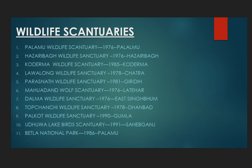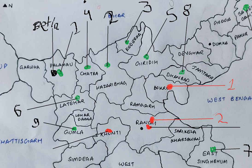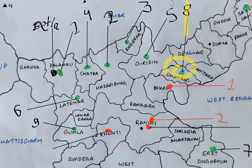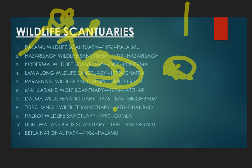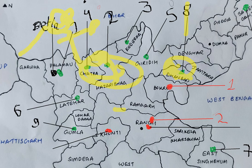Next is Topchanchi Wildlife Sanctuary in Dhanbad, established in 1978. It is situated at the foothills of the majestic Parasnath Hill, at a distance of 35 km from West Dhanbad. The area is about 8.75 square kilometers of dry mixed deciduous forest.